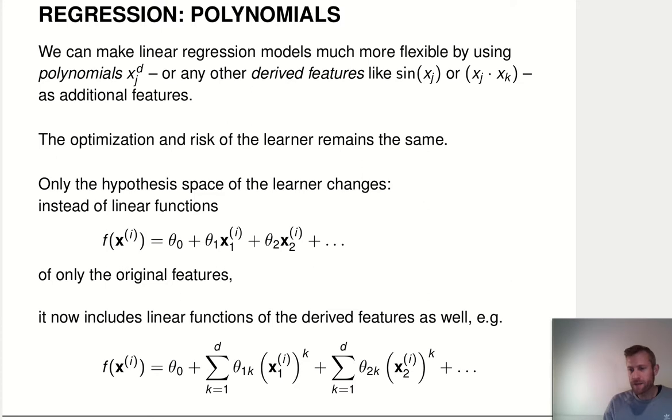We're going to talk about polynomials, but that same idea also applies to any other transformation of your covariates. Things like taking the sine of x, or doing things like taking the products of different features and using those.